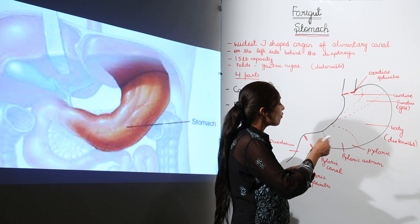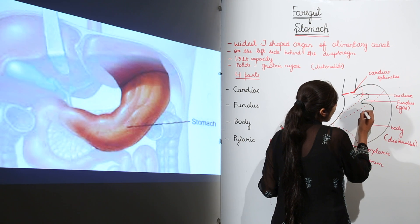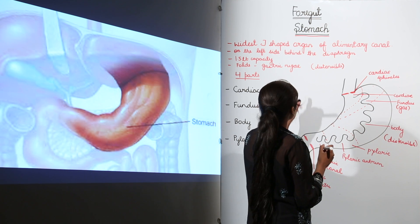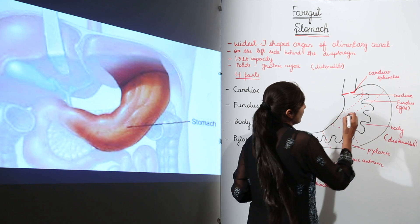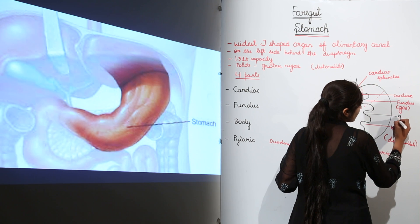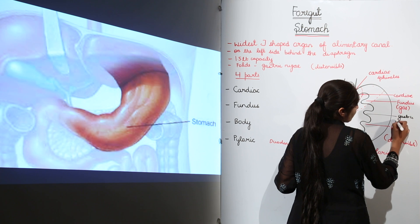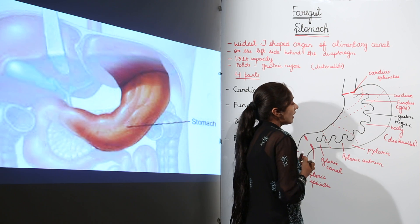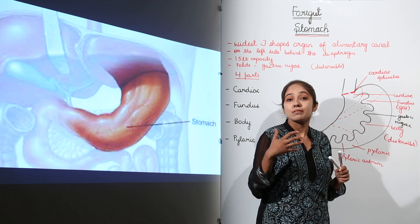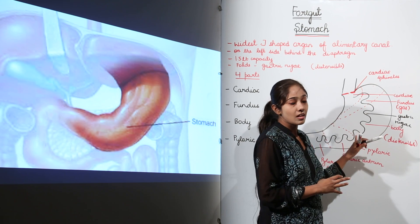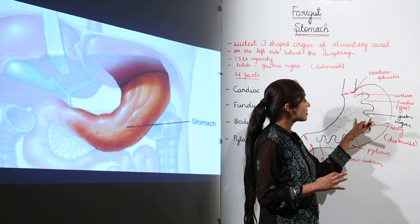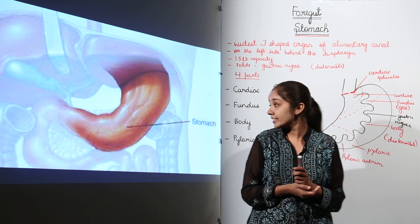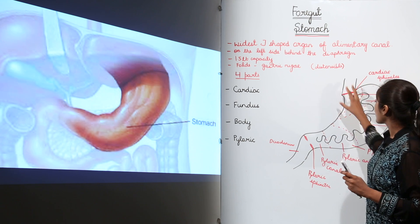There are certain folds in the stomach wall which we call gastric rugae — just label them on the diagram. These folds are present when the stomach is empty. When food goes inside the stomach, these folds get stretched so that more food can be accommodated.